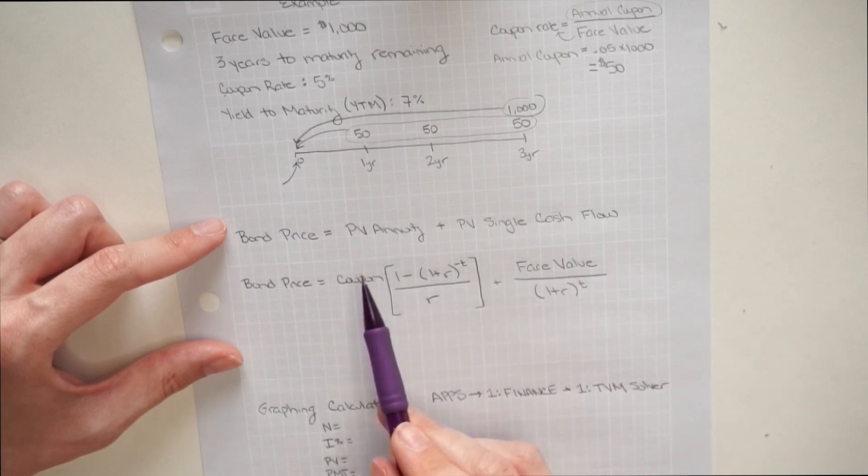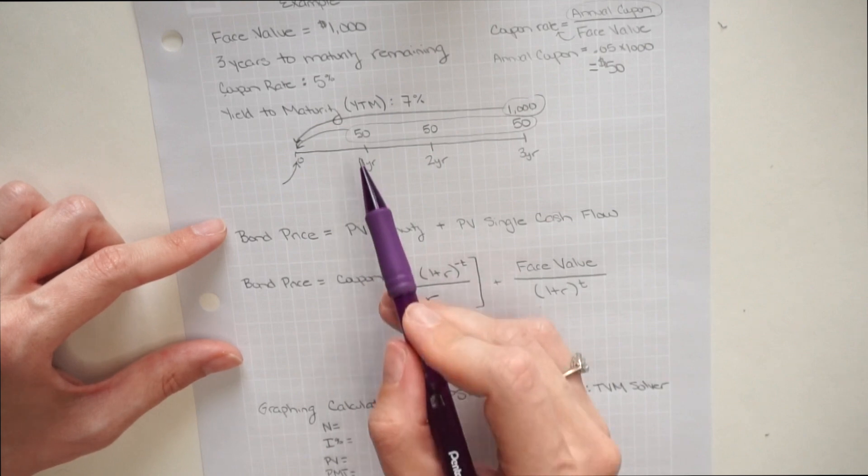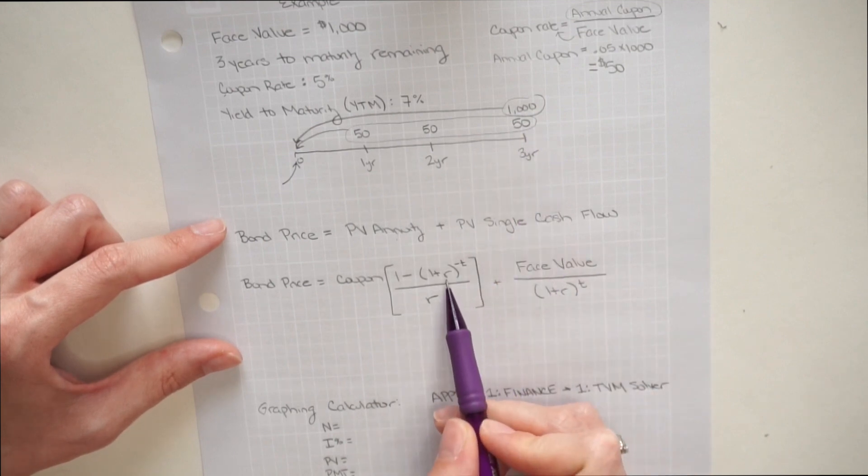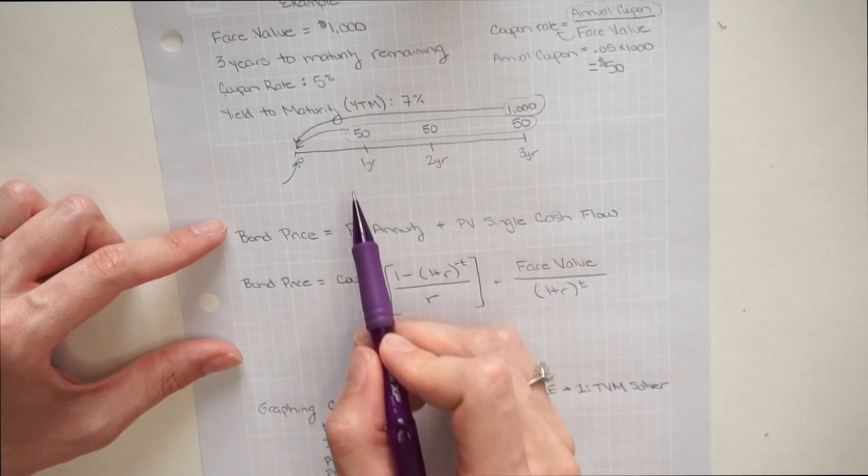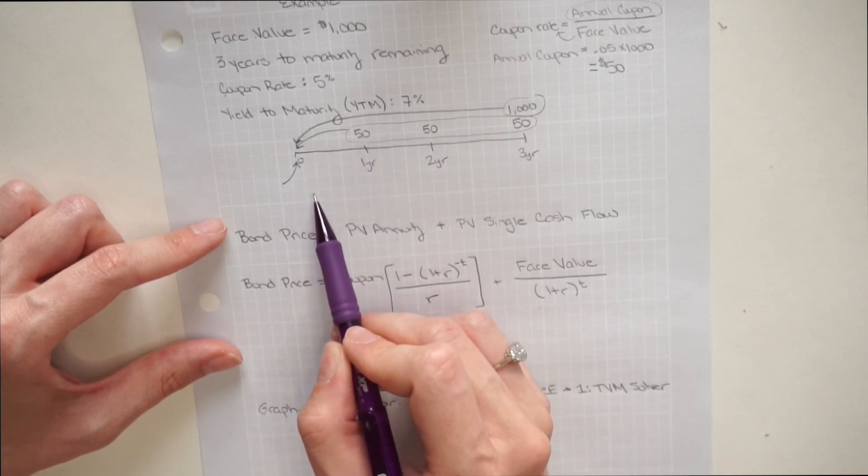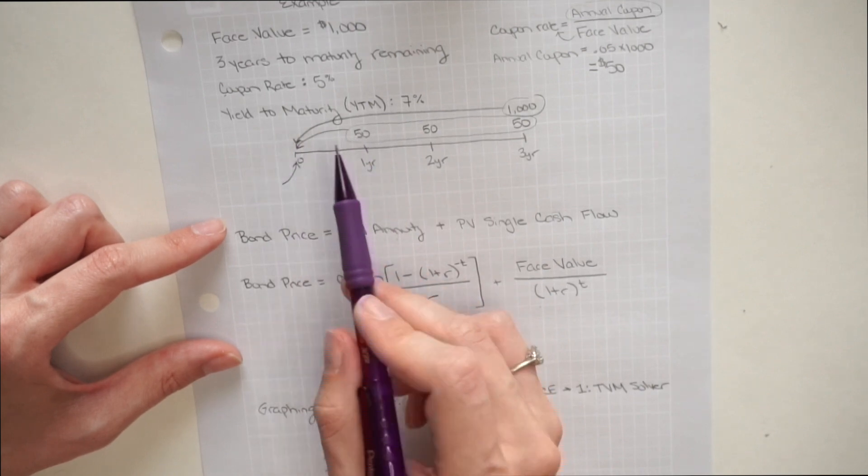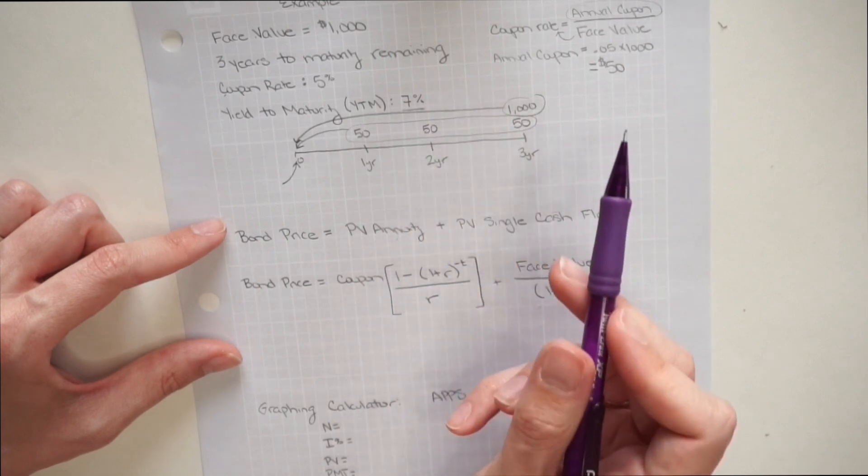So let's start with the inputs for our annuity. First up, we need our coupon. So our coupon is going to be that $50 that occurs each year. Then we need an R value. So this is where you have to really pay attention here, because the R value is what your discount rate is. It's not the rate that you determined the coupons with. So the discount rate in this case is going to be the yield to maturity of the bond or 7%.